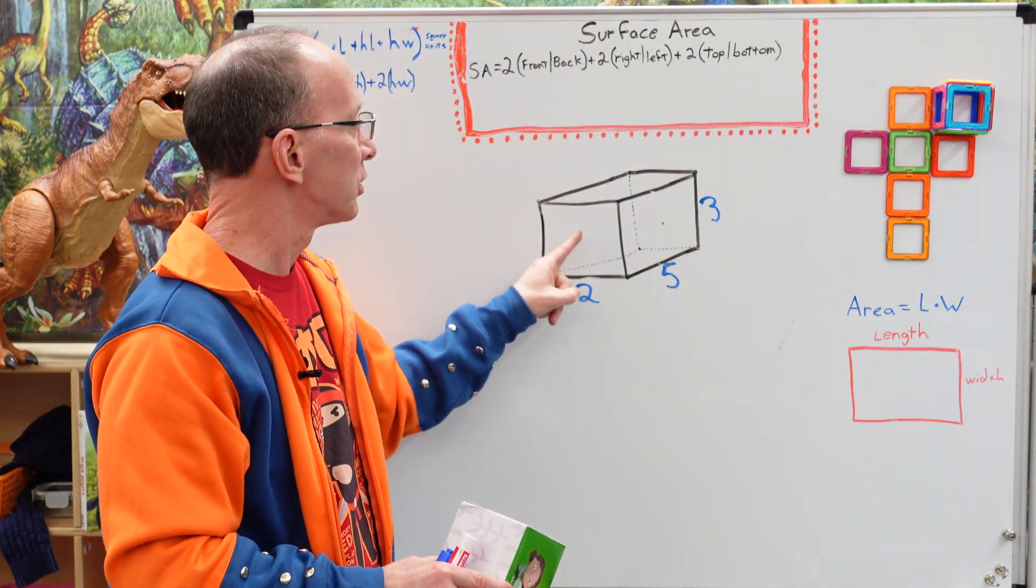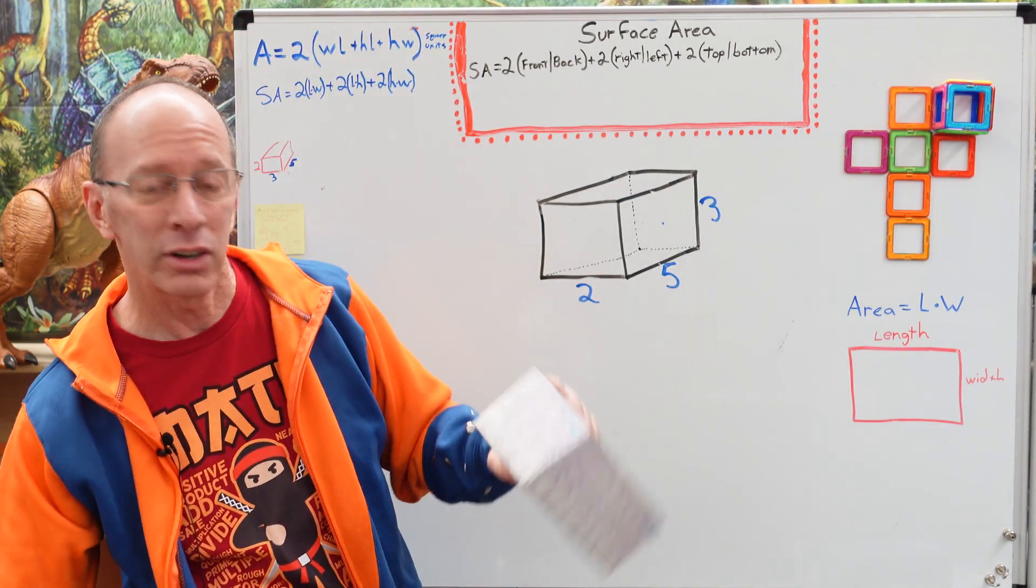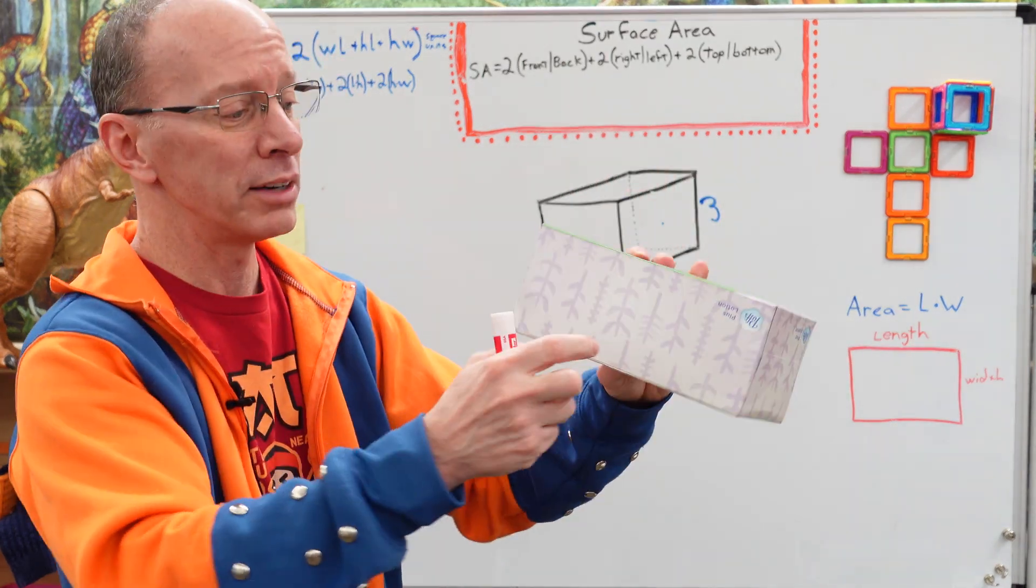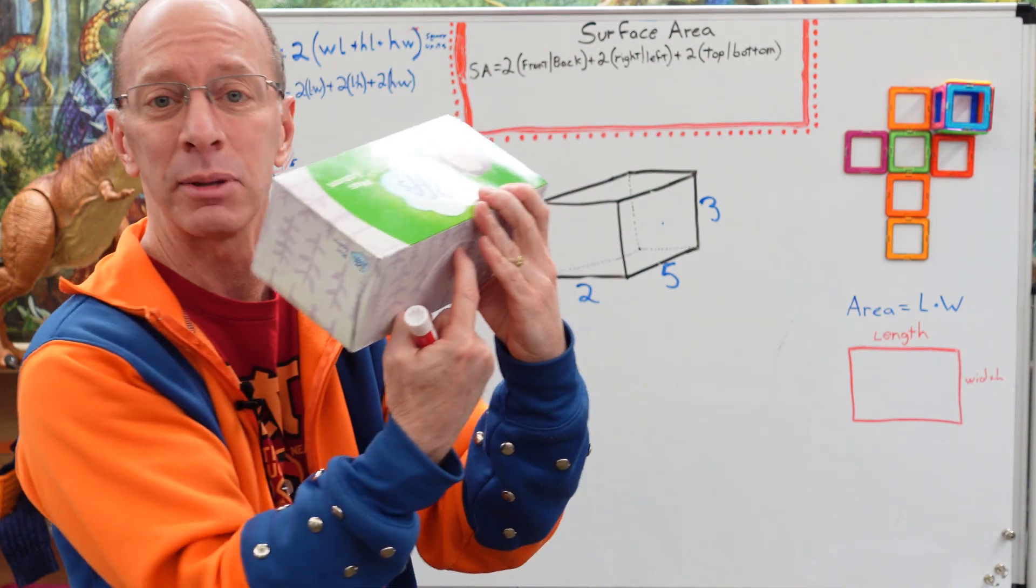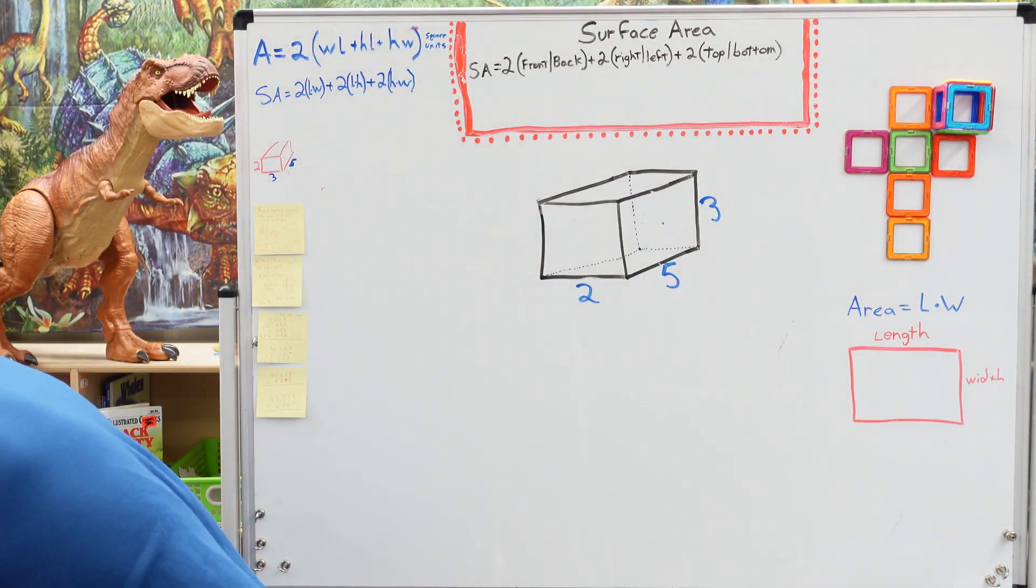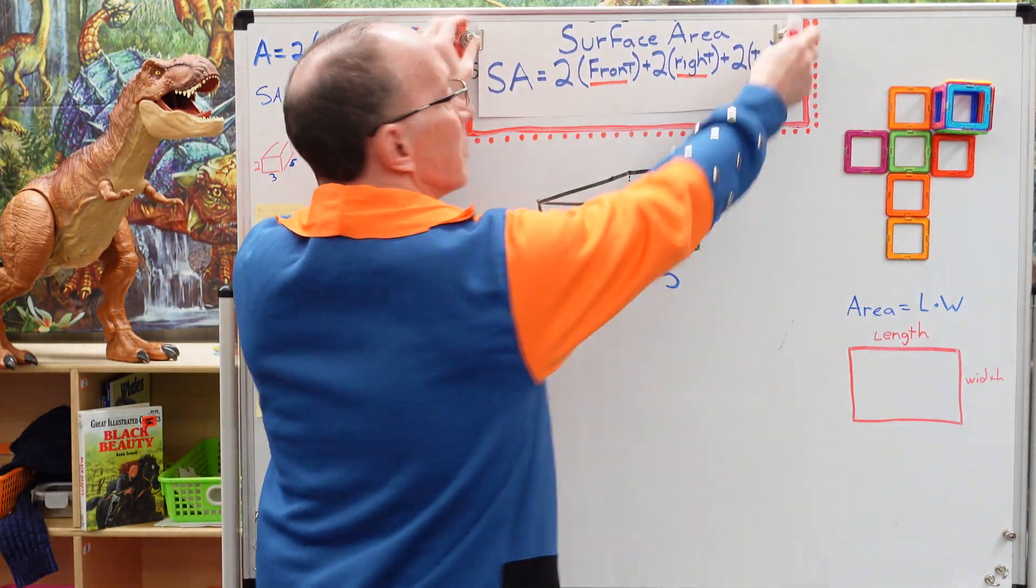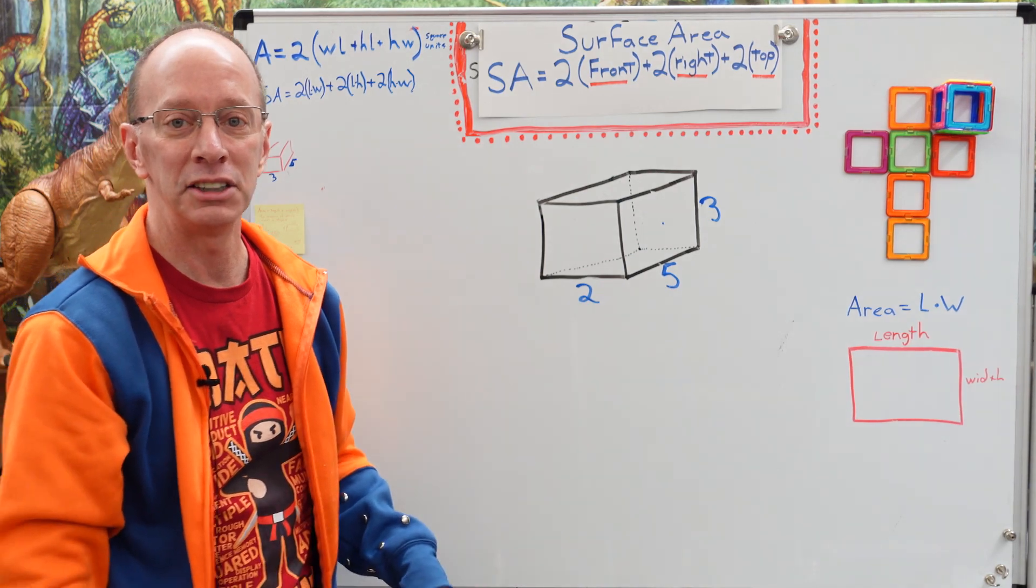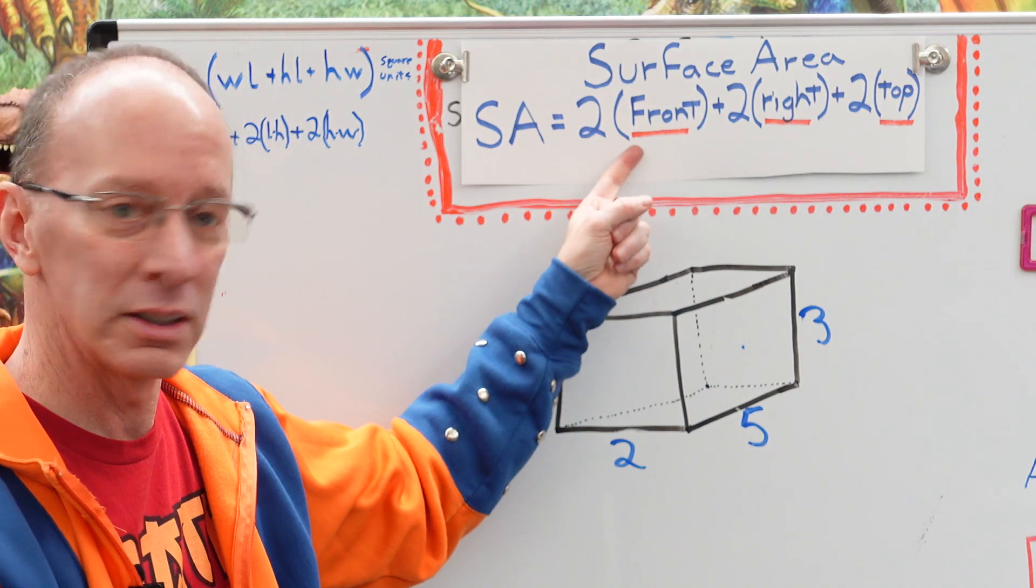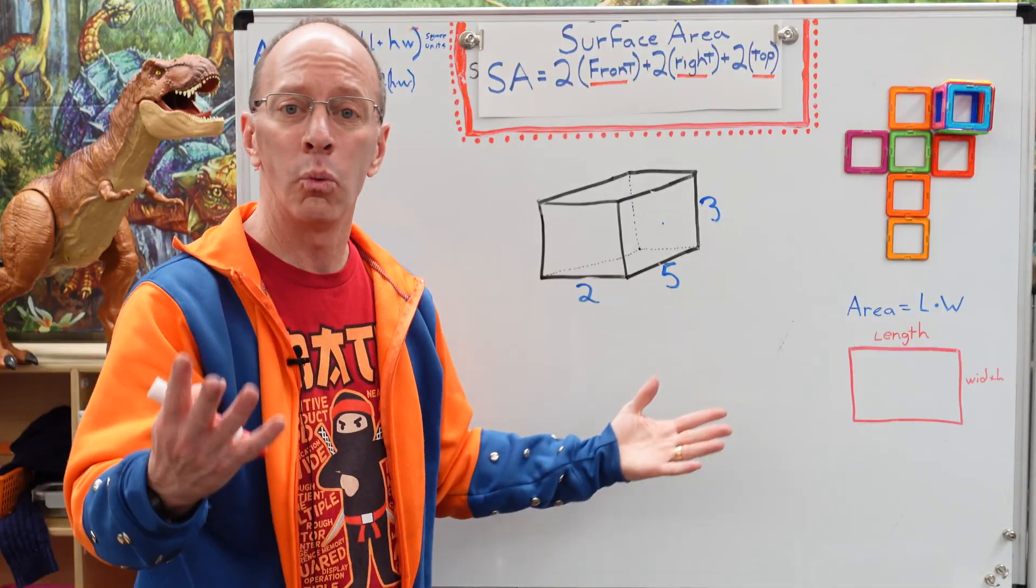When we figure out the surface area of this rectangle, that is going to be the same as this side. Whatever this is, it's the same here. Whatever the left is, it's the same on the right. Whatever the top one is, it's the same on the bottom. So I got a new formula and this is it right here. I told you I'd make it easy cheesy lemon squeezy for you. So the surface area equals two times the front plus two times the right plus two times the top. Way easier.